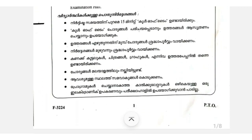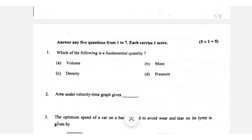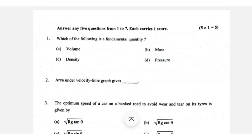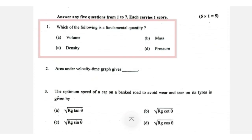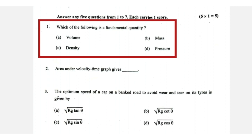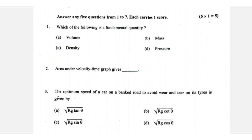Now let's see how these answers are. In the session, which of the following is the fundamental quantity? The answer is B — mass is the fundamental quantity. The others are derived quantities. The area under the velocity-time graph is displacement. The slope is acceleration, but displacement is the answer.